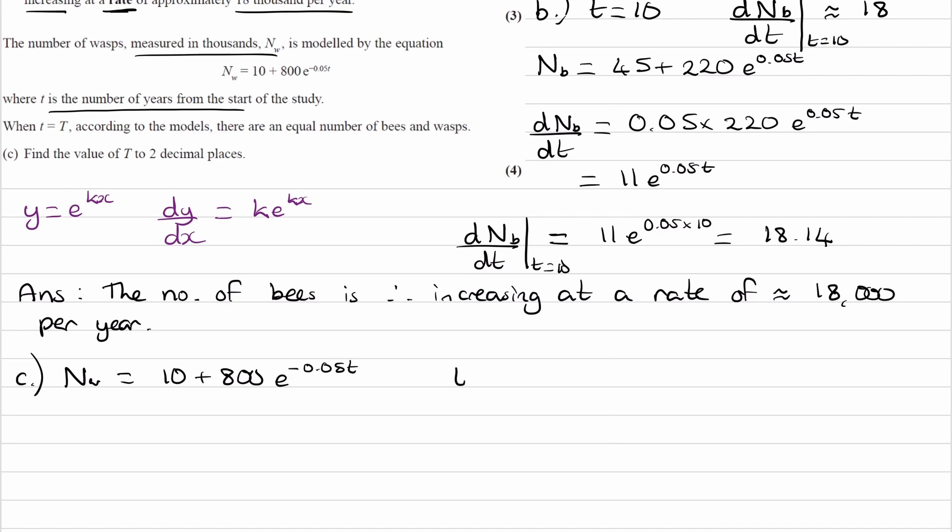We're told that when time equals capital T, there's an equal number of bees and wasps. So if you want to work out what T is, your first hint is to use this information, use the previous equation that we have for nb as well, put them all together, and try to solve the subsequent equation.